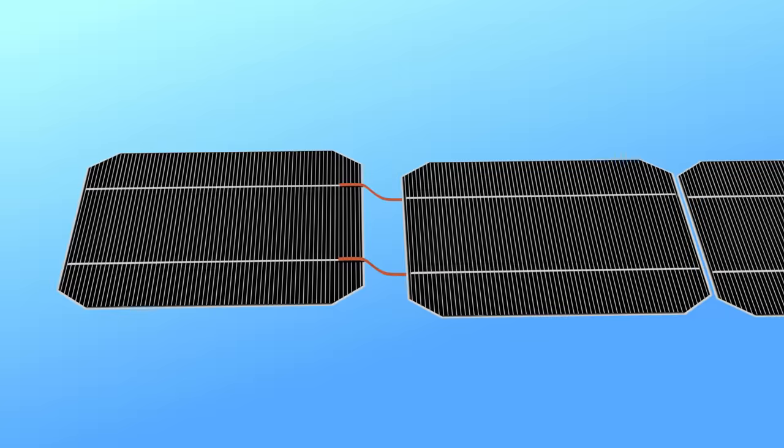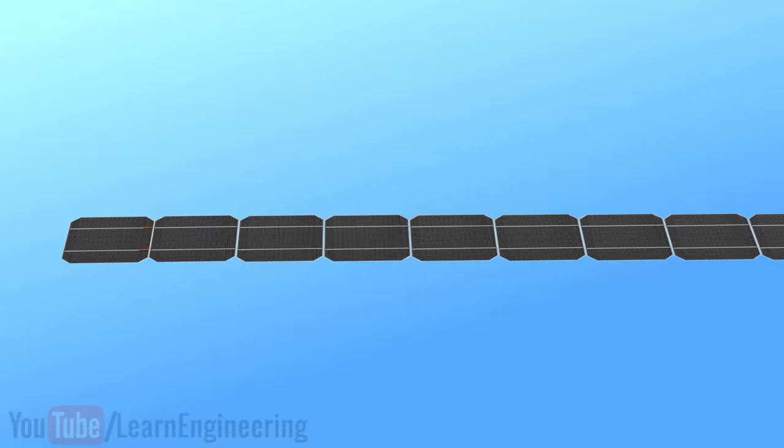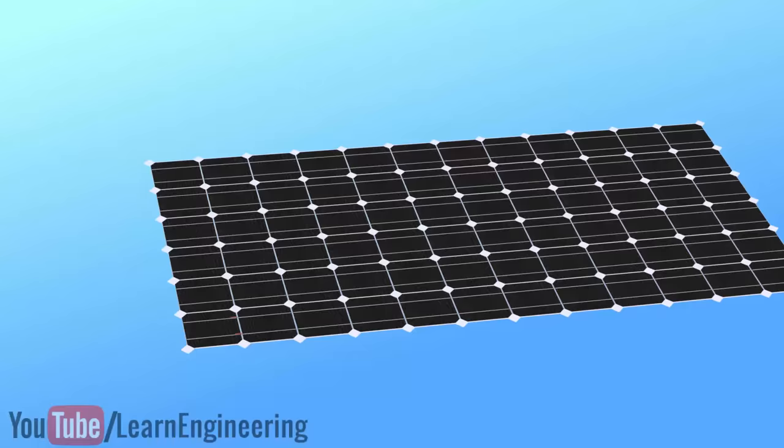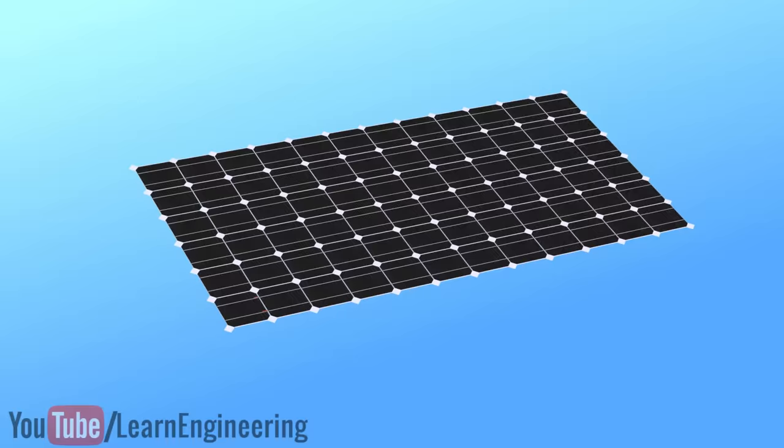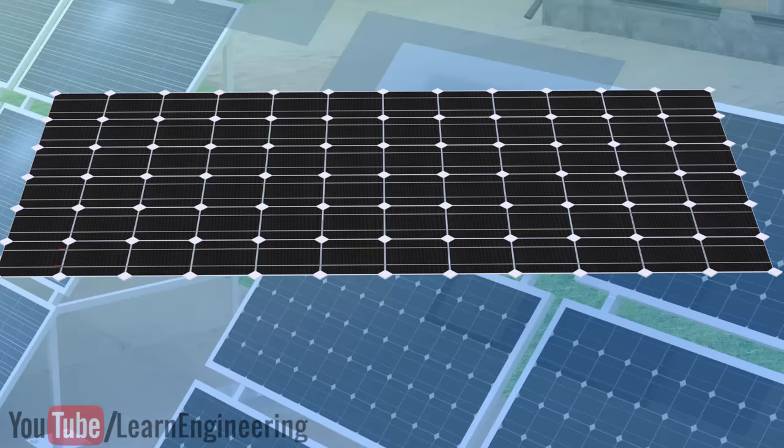Here, it forms a series connection. When you connect these series-connected cells parallel to another cell series, you get the solar panel. A single PV cell produces only around 0.5 voltage. The combination of series and parallel connection of the cells increases the current and voltage values to a usable range.